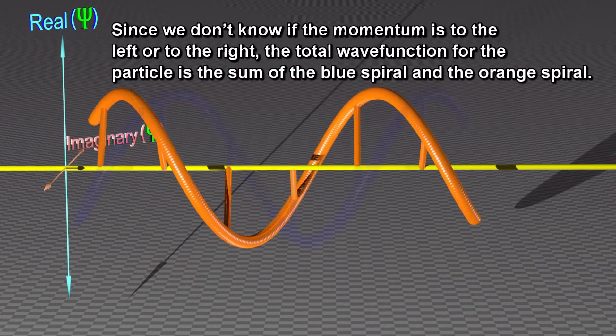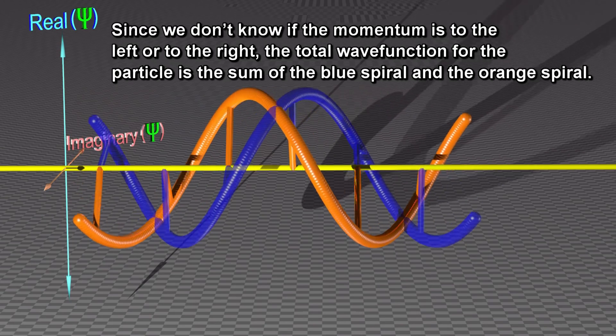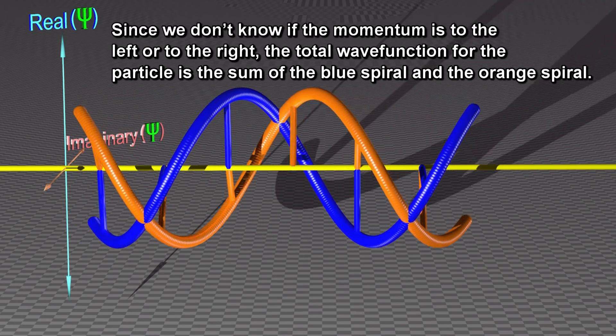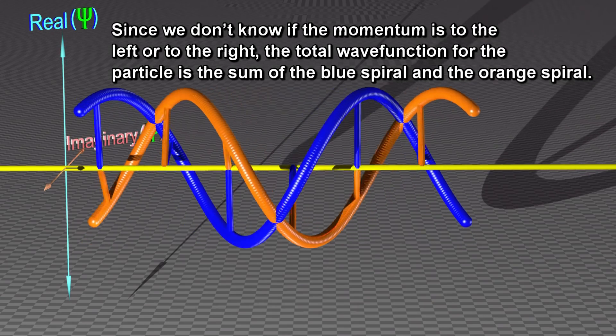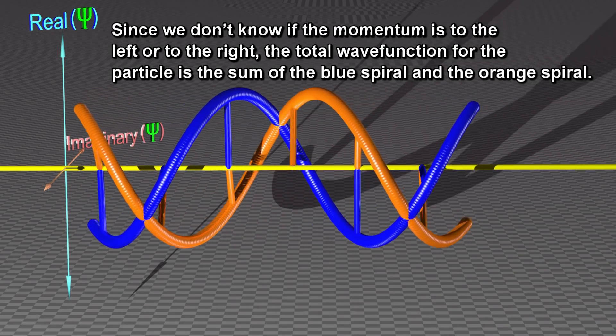Since we do not know if the momentum is to the left or to the right, the total wave function for the particle is the sum of the blue spiral and the orange spiral.